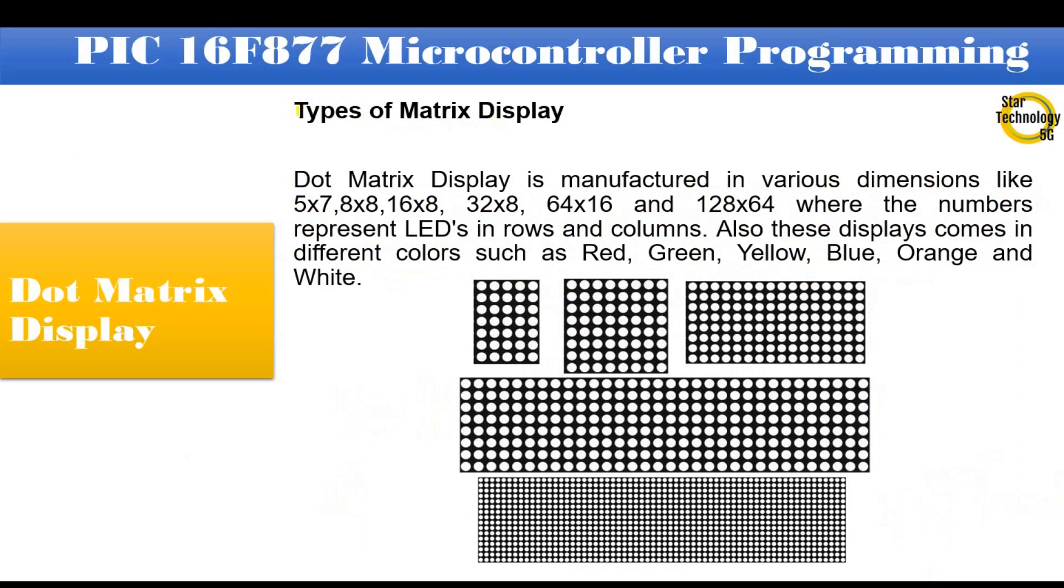Types of matrix display. Dot matrix display is manufactured in various dimensions like 5x7, 8x8, 16x8, 32x8, 64x16 and 128x64 where the numbers represent LEDs in rows and columns. Also these displays come in different colors such as red, green, yellow, blue, orange, and white.